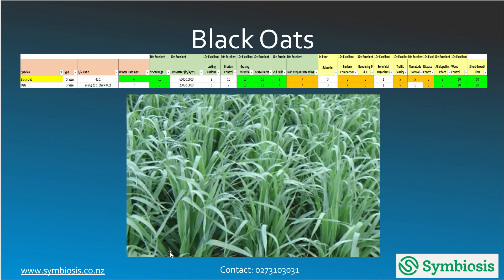Black oats are very good at scavenging nitrogen, good for grazing, and they also help from a weed control perspective, are quite good for soil growth, and can obviously be used as a forage harvest. They also keep residue on the ground.